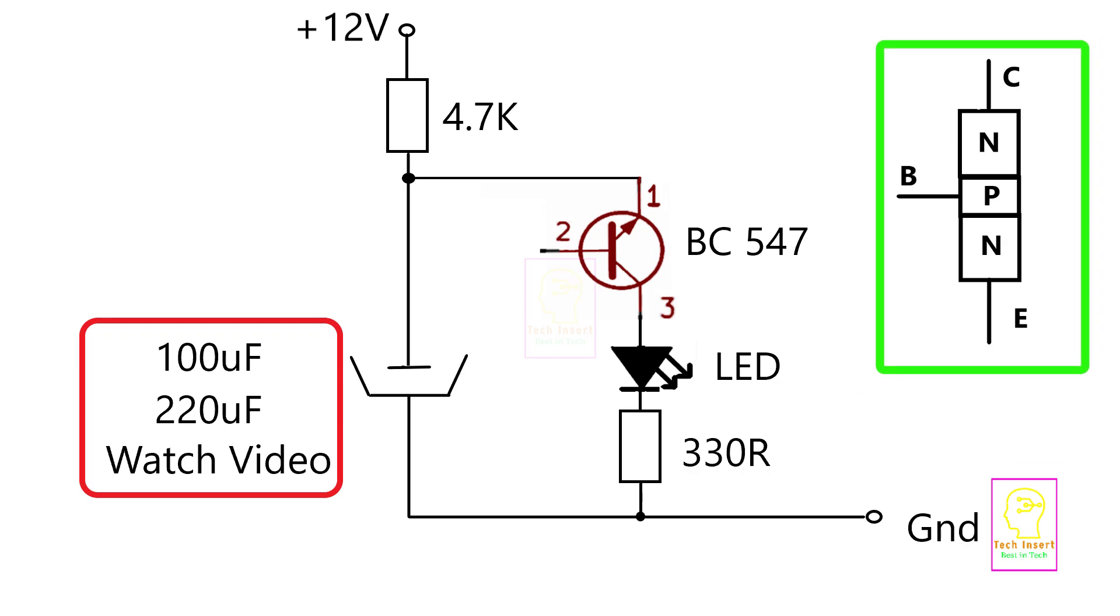If you watch the transistor's internal structure you can understand it easily. This will make the current flow from collector to emitter to make the LED switch on. When the capacitor discharges completely then the transistor will become switched off and LED will also become switched off. Then the capacitor starts charging and continues this cycle to form a flashing LED effect.